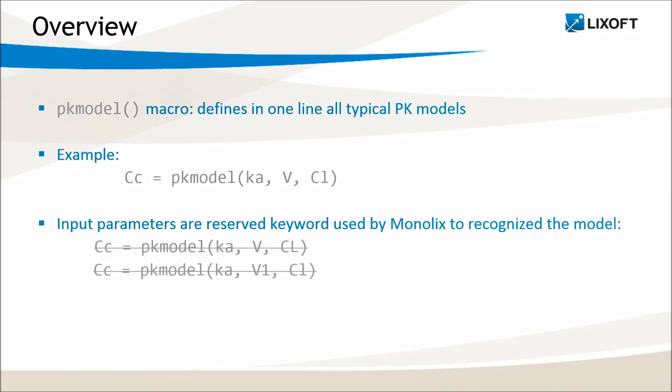If you really would like to work with CL in capital letters and V1, you need to write it like this. First the reserved keywords, equals, and then the new name of the parameter. This new parameter is then used as model input.